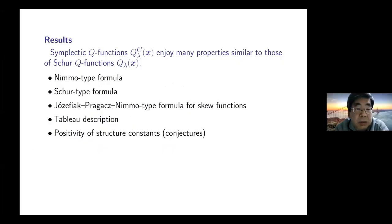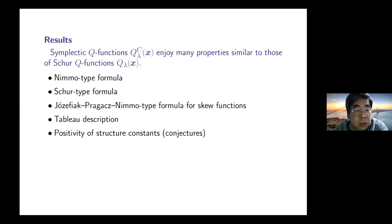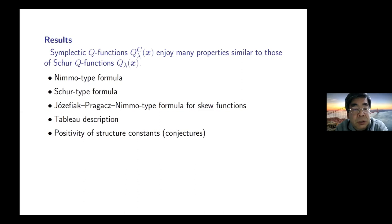Our results can be summarized as follows: the symplectic Q function enjoys many properties similar to those of Schur Q functions. First, we have a NEMO-type formula as a ratio of two Pfaffians, and also a Schur-type formula where q_{lambda}^C(x) is expressed as a single Pfaffian with entries being the Q functions of at most two rows. We also have a Pfaffian formula for skew functions, a proof of the tableau description originally conjectured by King and Hamel, and some positivity conjectures including the structure constants.